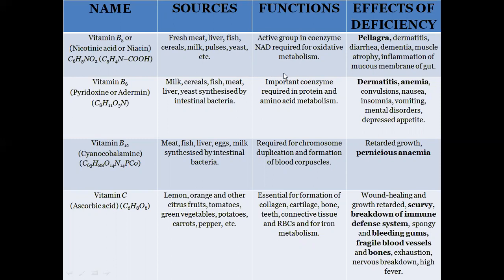Vitamin B6 is sourced from milk, cereals, fish, and yeast. It is an important coenzyme required in protein and amino acid metabolism. The effects of its deficiency include anemia, insomnia, vomiting, and mental disorders.